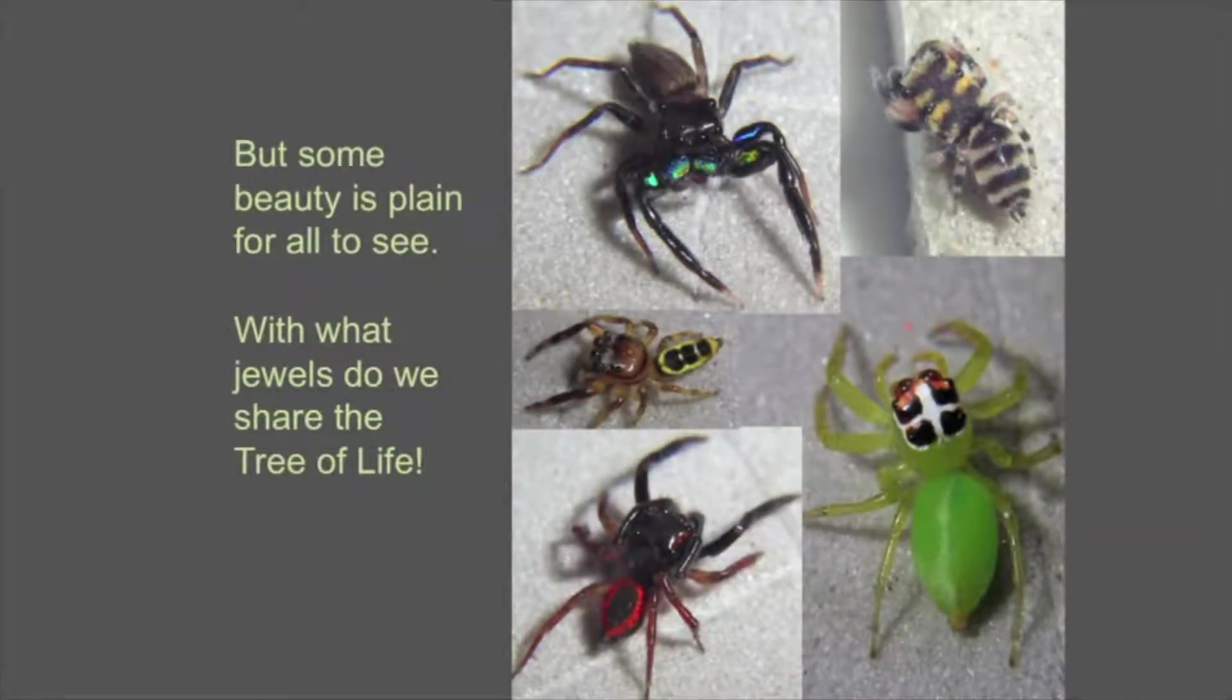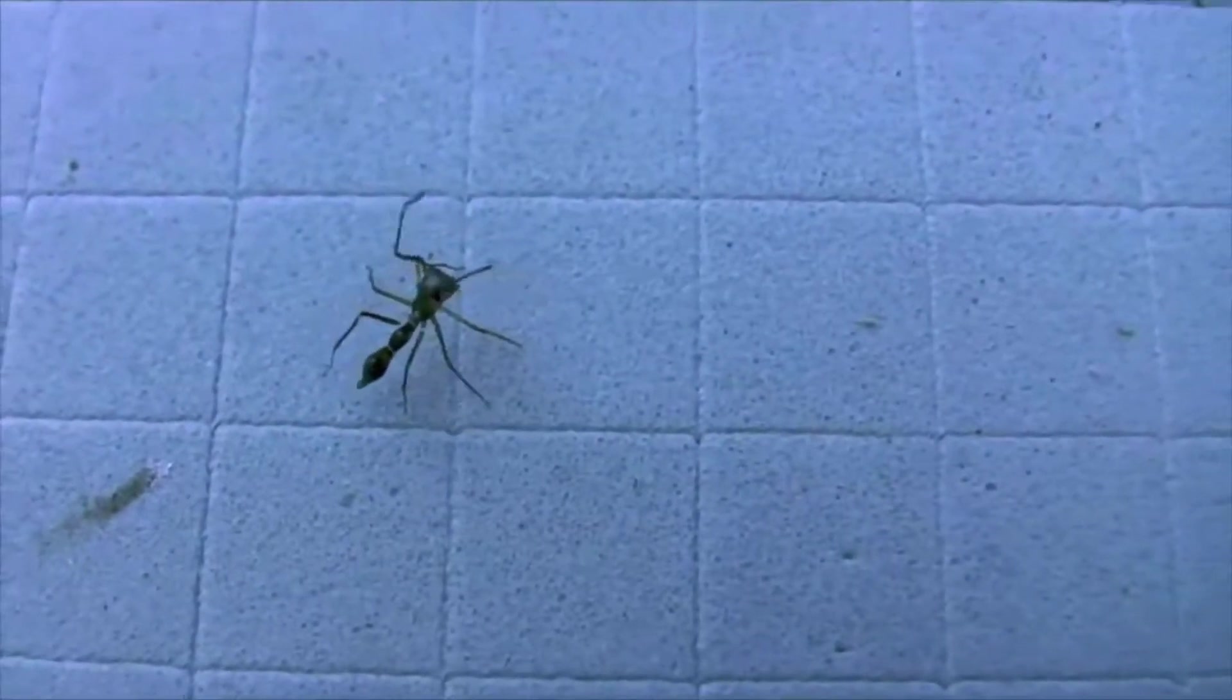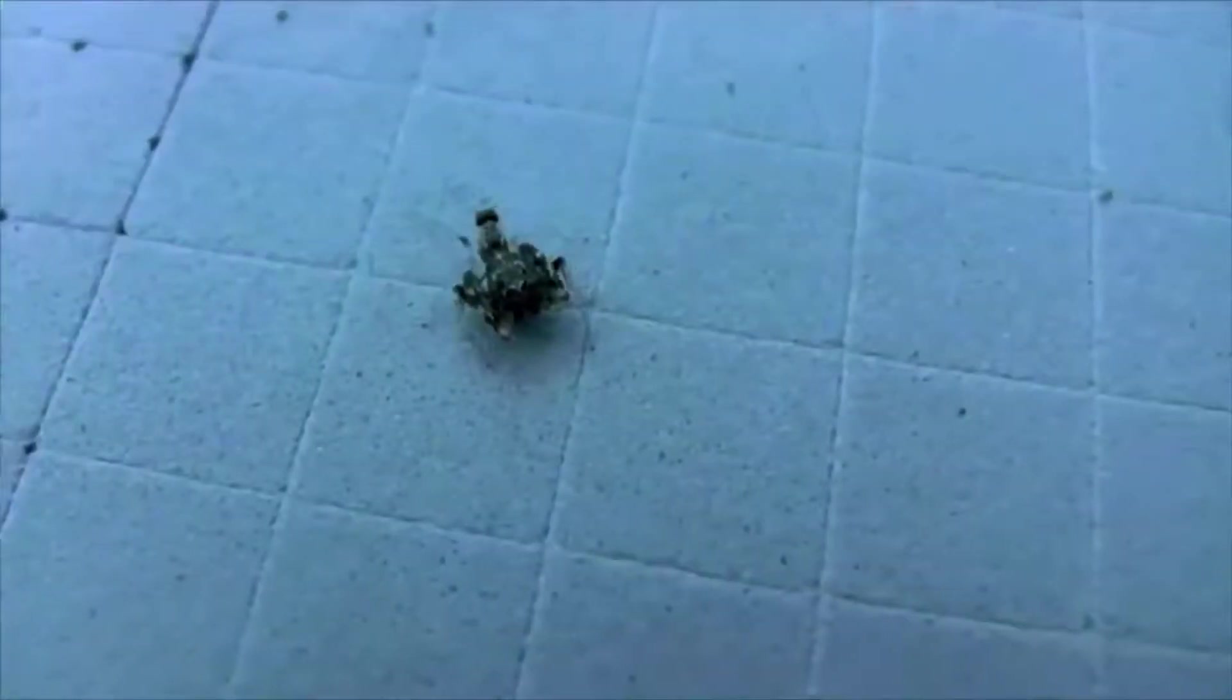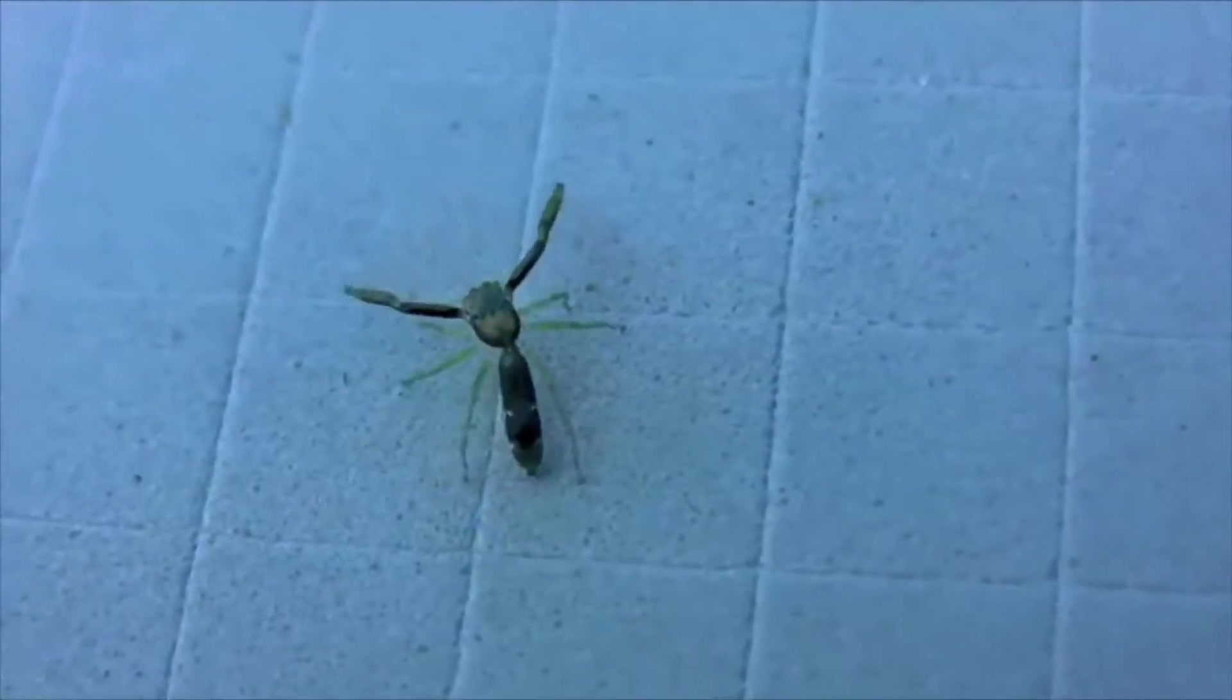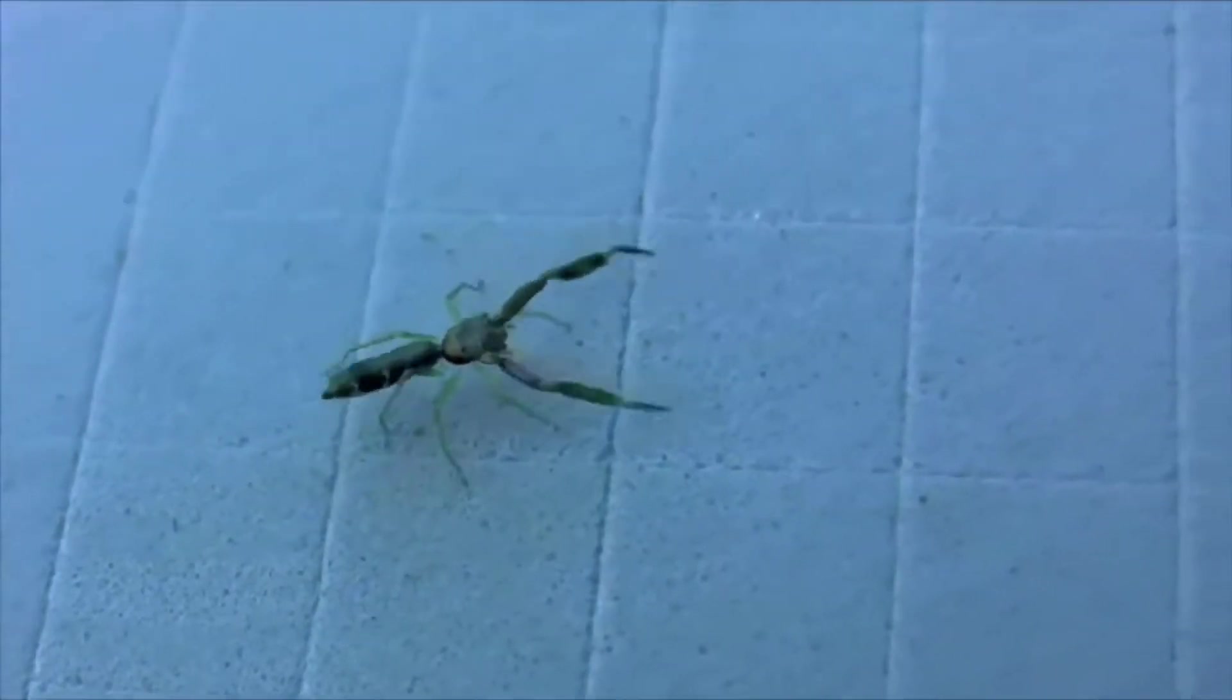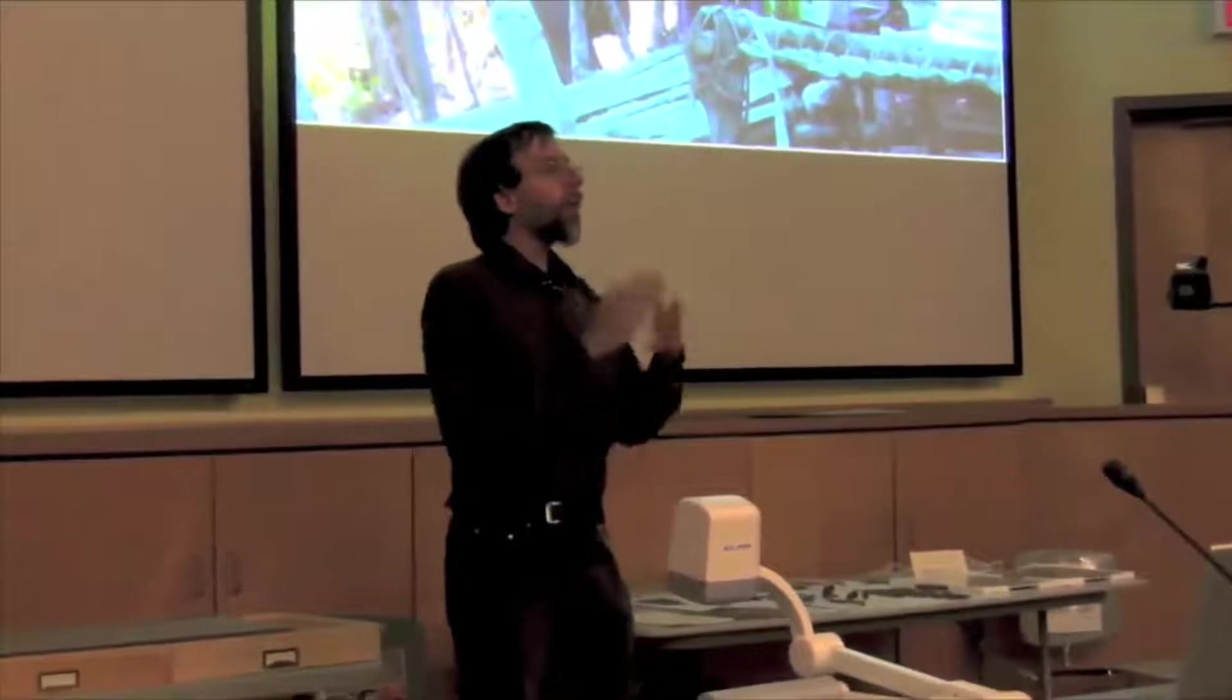There's some beauty, though, in these spiders that I think, at least, is plain for all to see. Some pretty amazing colors and interesting forms and so forth, and we really do share the tree of life with some pretty incredible jewels. I just want to show you a couple of them live. This is one of the ones that looks like an ant. It's waving around its first legs as if they were antennae. This is one that looks like a beetle. This is one that looks like a bit of debris. Possibly a bird dropping, it's hard to tell. It walks in a very jerky way. This one, I don't know what it looks like, but it doesn't look much like a jumping spider. Looking up at us. This is another one looking up at us and looking frantic.